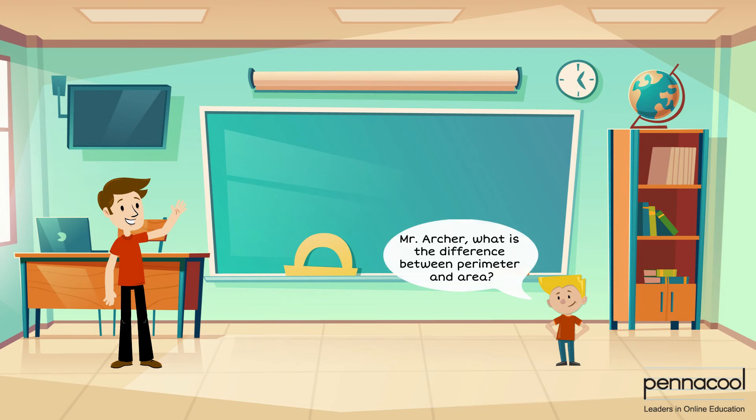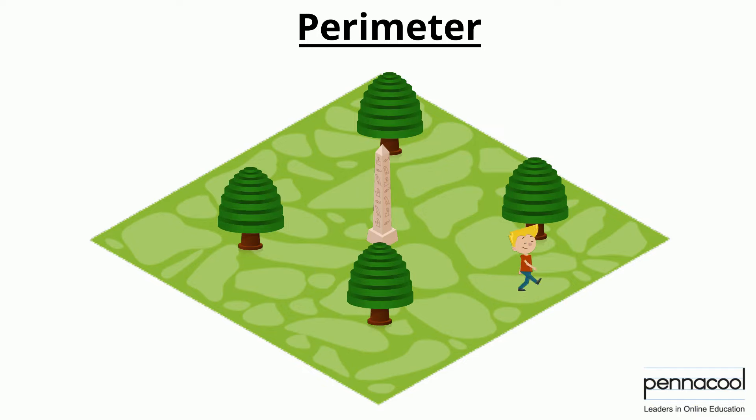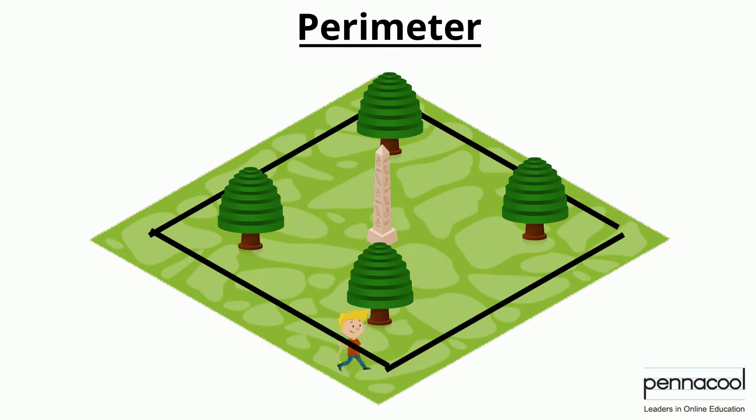Frank is trying to learn the difference between perimeter and area. His teacher, Mr. Archer, steps in to help him. Mr. Archer explains that perimeter is the distance around a 2D shape. He uses the example of Frank walking all the way around Adam Smith Square. As he walks, he travels the perimeter of the square.